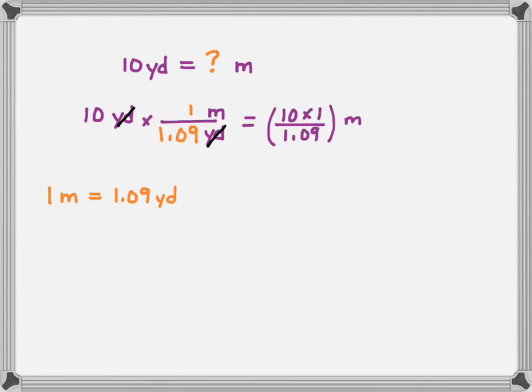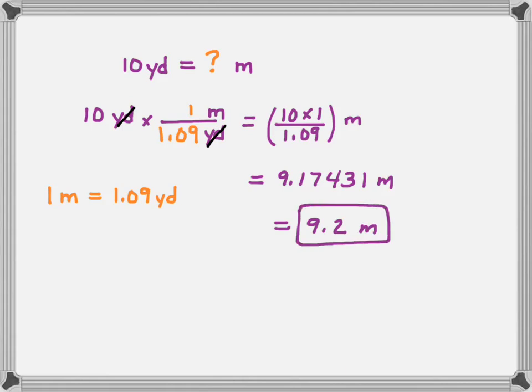I have 10 times 1 divided by 1.09, and this quantity will be in units of meters. My calculator gives me 9.17431 meters. But in terms of significant figures, I have 2 significant figures to start with and I need 2 significant figures to end with — so I look at 9.1, the next digit is 7, which is greater than 5, so I round up to 9.2. So my answer is 9.2 meters — 10 yards is equal to 9.2 meters.